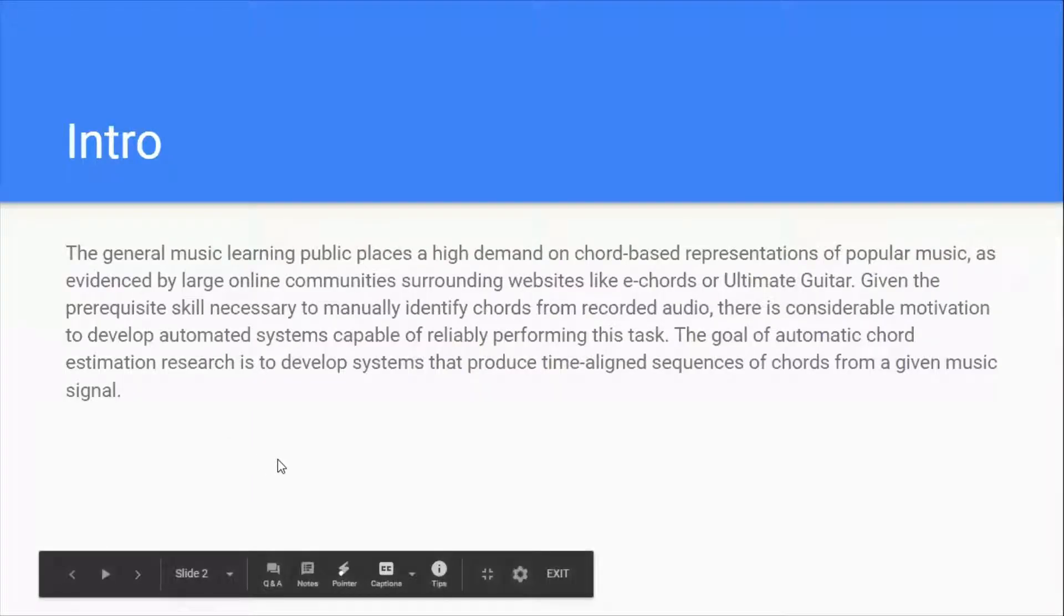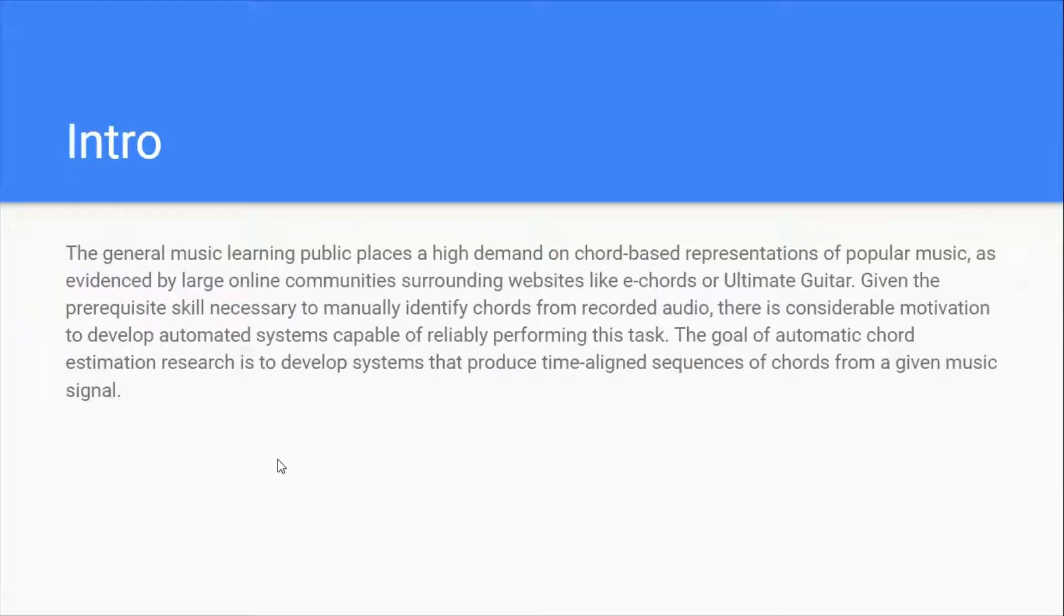In general, music learning public places a high demand on chord-based representations of popular music, as evidenced by large online communities surrounding websites like E-chords or Ultimate Guitar. Given the prerequisite skill necessary to manually identify chords from recorded audio, there is considerable motivation to develop automated systems capable of reliably performing this task. The goal of automatic chord recognition research is to develop systems that produce time-aligned sequences of chords from a given music signal.